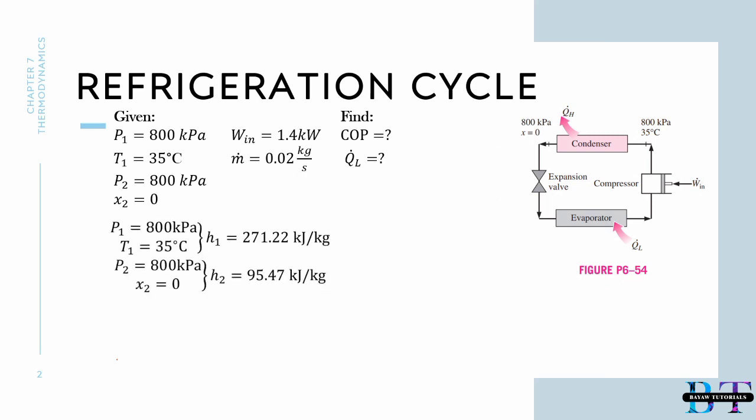Now looking at our property table from our given data, we have in our state 1 our enthalpy will be 271.22 kilojoules per kilogram. In our state 2, we have our 800 kilopascals that will lead to the enthalpy at our state 2 with 95.47 kilojoules per kilogram. And from that we can calculate our heat.